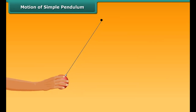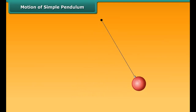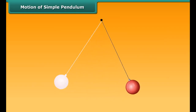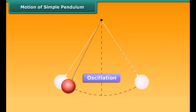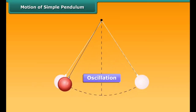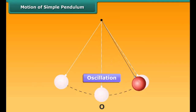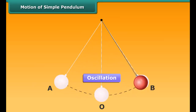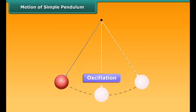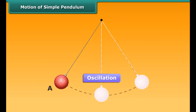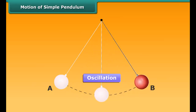Suppose the bob of a simple pendulum is in equilibrium. If we now take it to one side — left or right — and release it, it begins to move to and fro. This to-and-fro motion of a simple pendulum is called oscillatory motion. One full to-and-fro motion of the pendulum is called an oscillation. The pendulum completes one oscillation when its bob, starting from equilibrium position O, moves to one extreme position A, then to the other extreme position B, and back to O. Alternatively, an oscillation can be measured as the movement of the bob from one extreme position A to the other extreme position B and back to A.